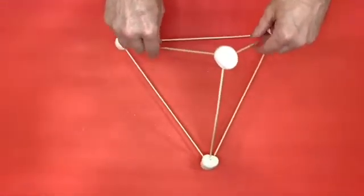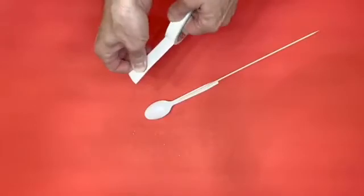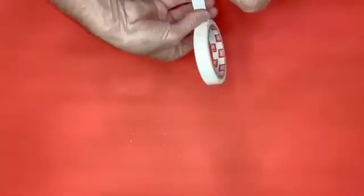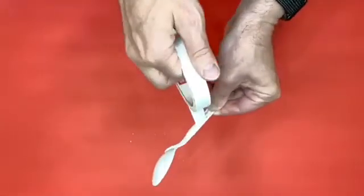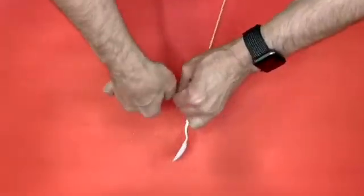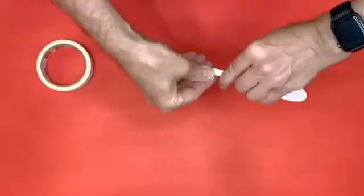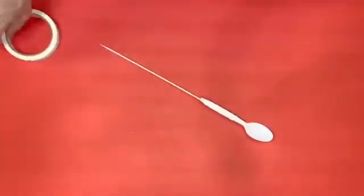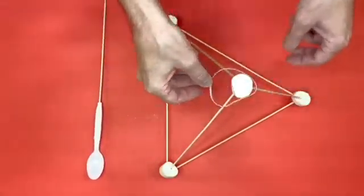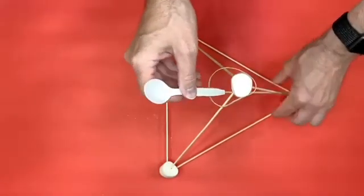Then we will take the last skewer and tape a plastic spoon securely onto the end of that skewer. Once we've done that, then we are going to take an elastic band and put it over the top of a marshmallow. Here's the elastic band over the marshmallow, and then we are going to take the skewer with the spoon and stick it into one of the marshmallows.